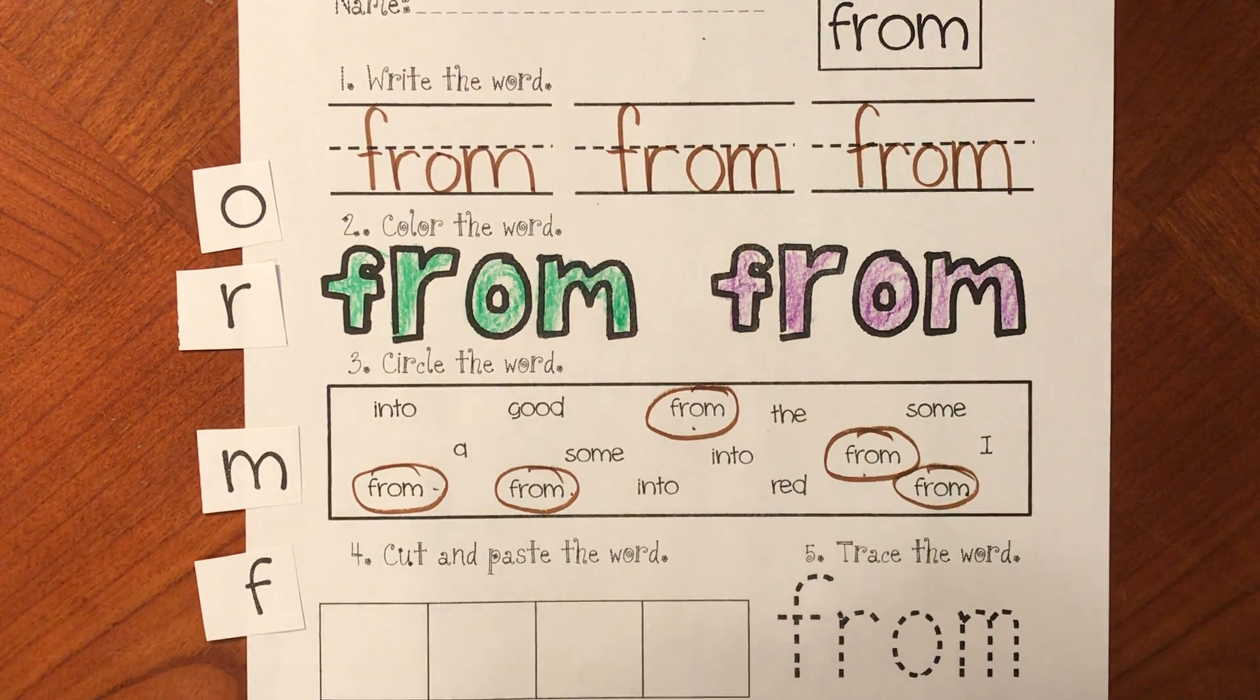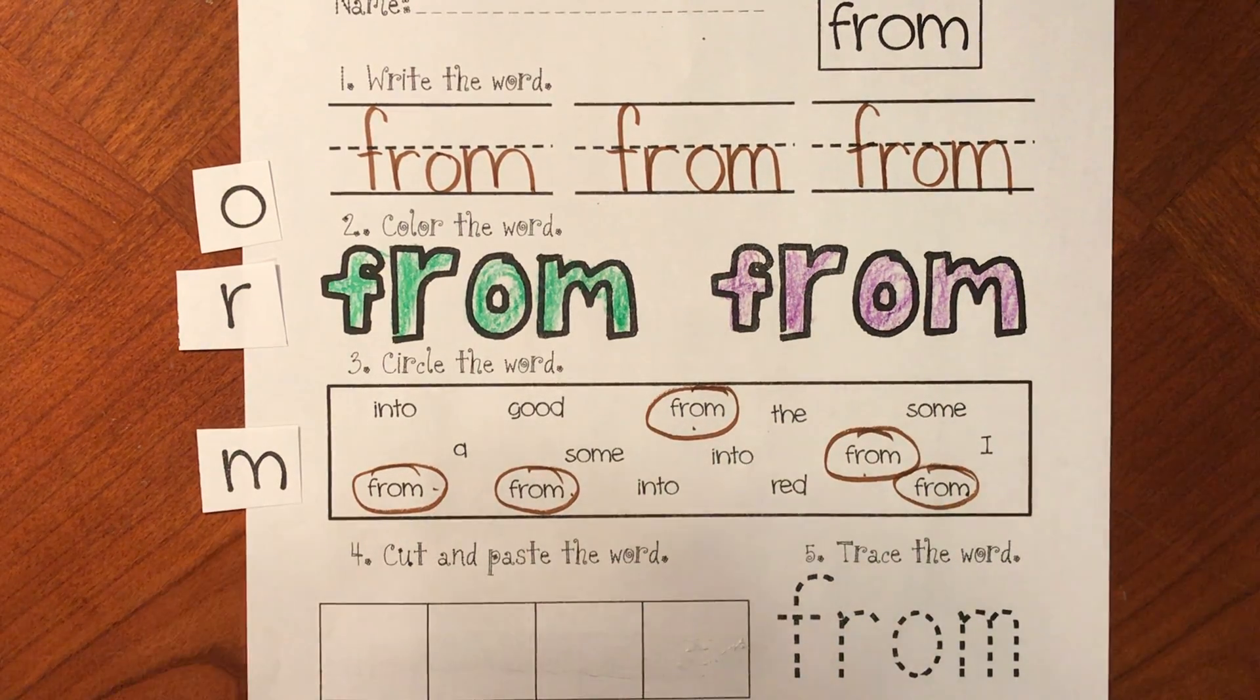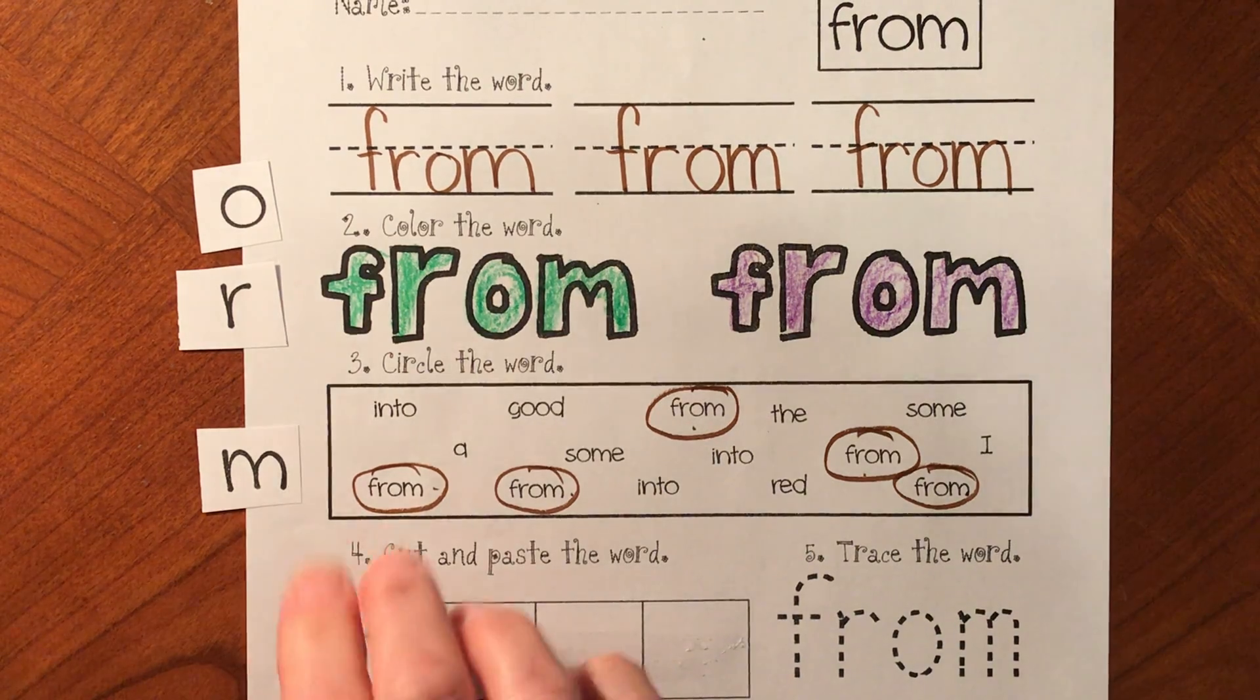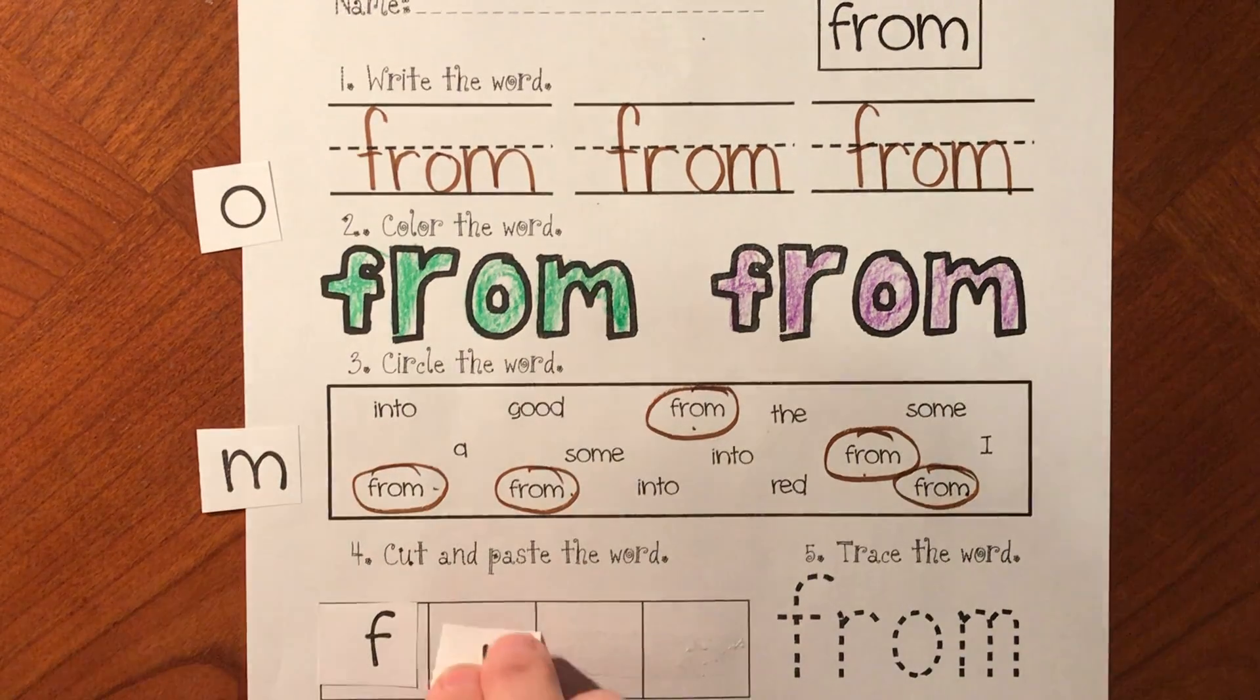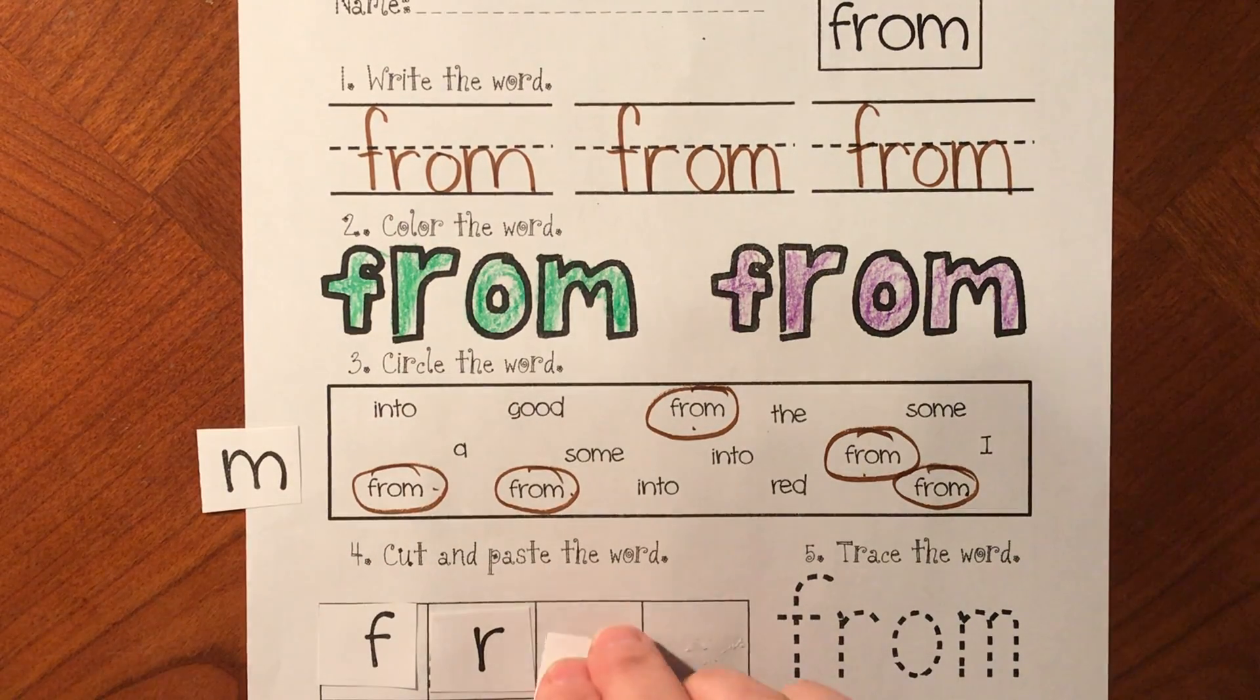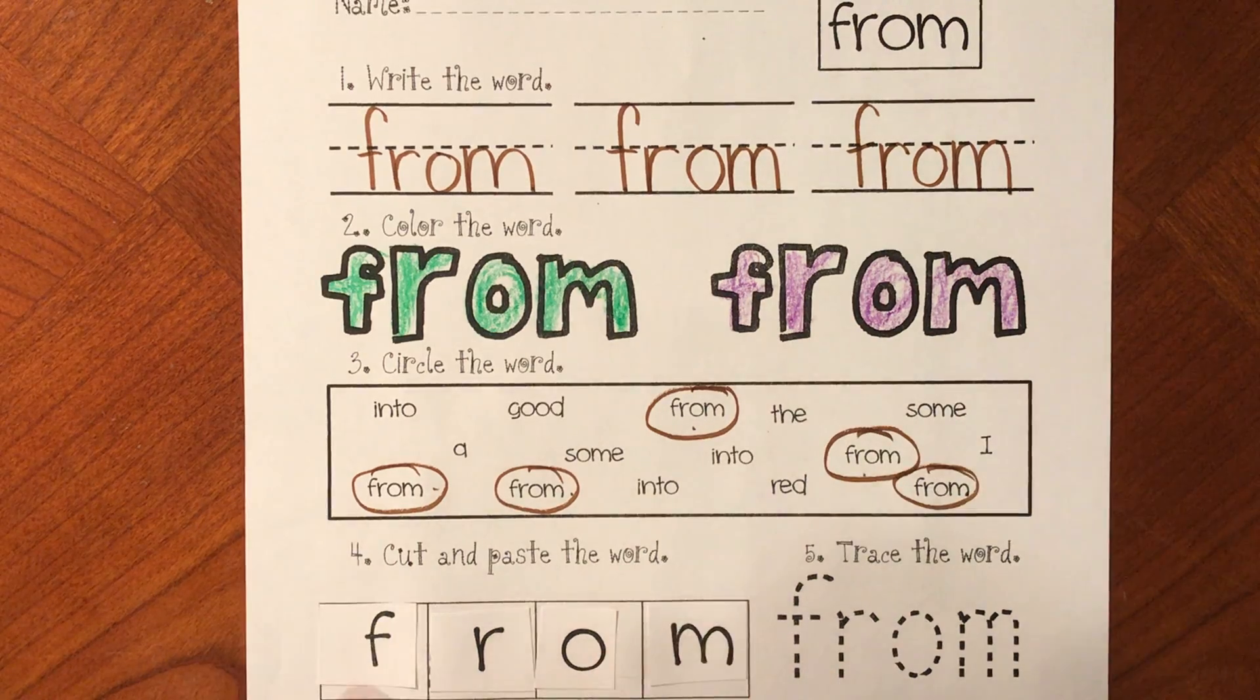Now we need to build the word from. What letter comes first? Yes, it's F. And after the F sound, we hear R. The O is going to say U in this word. And then M. From. From.